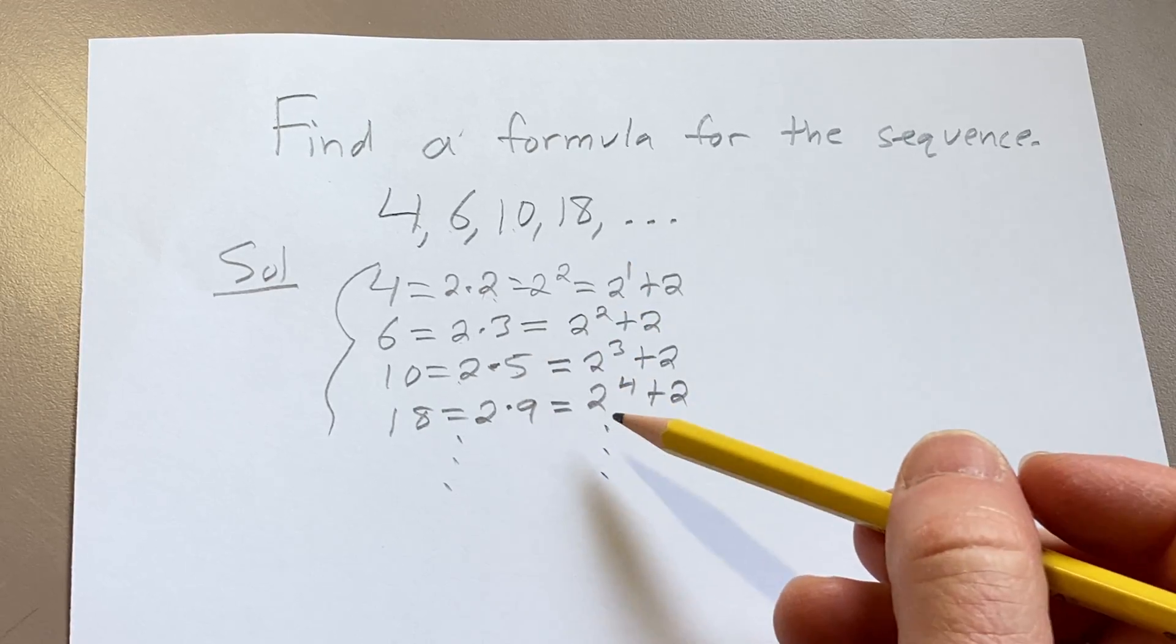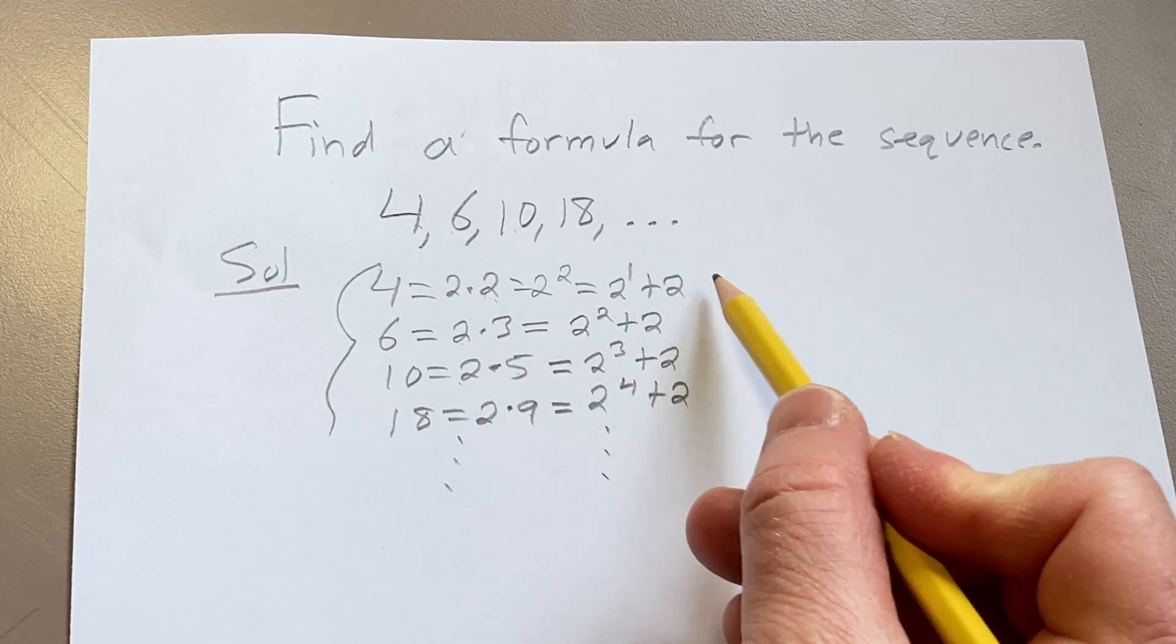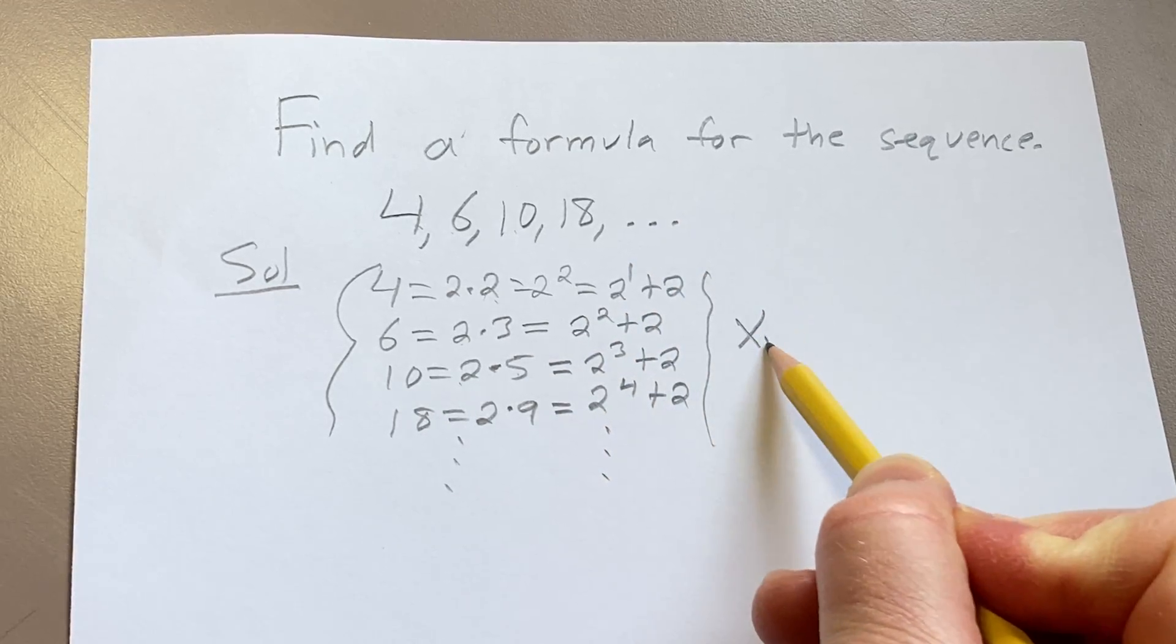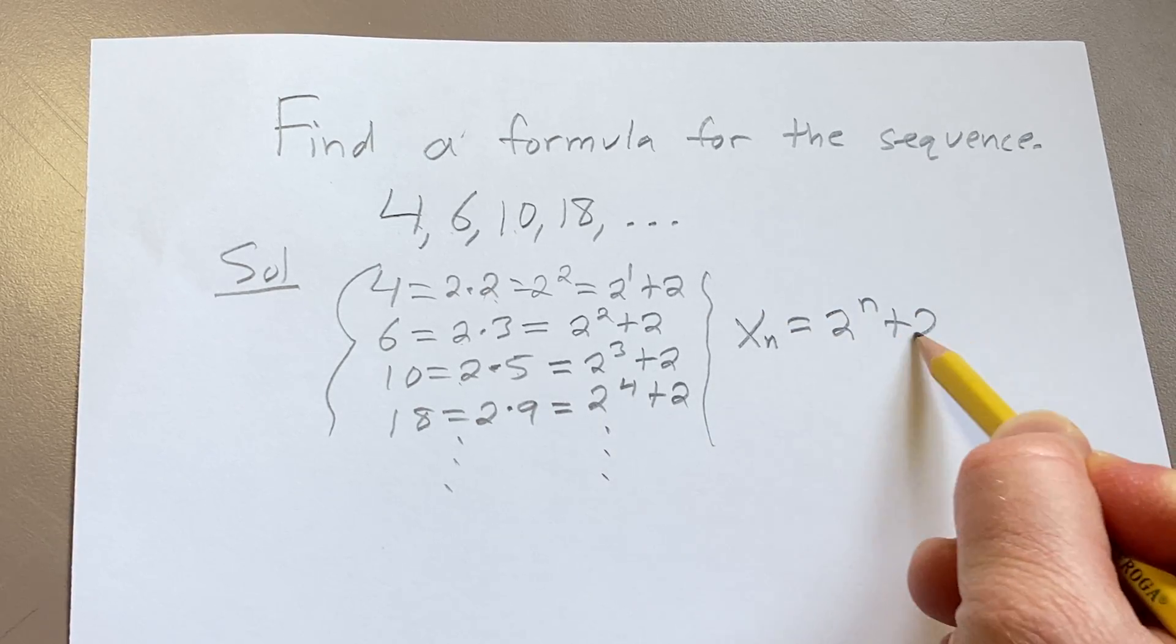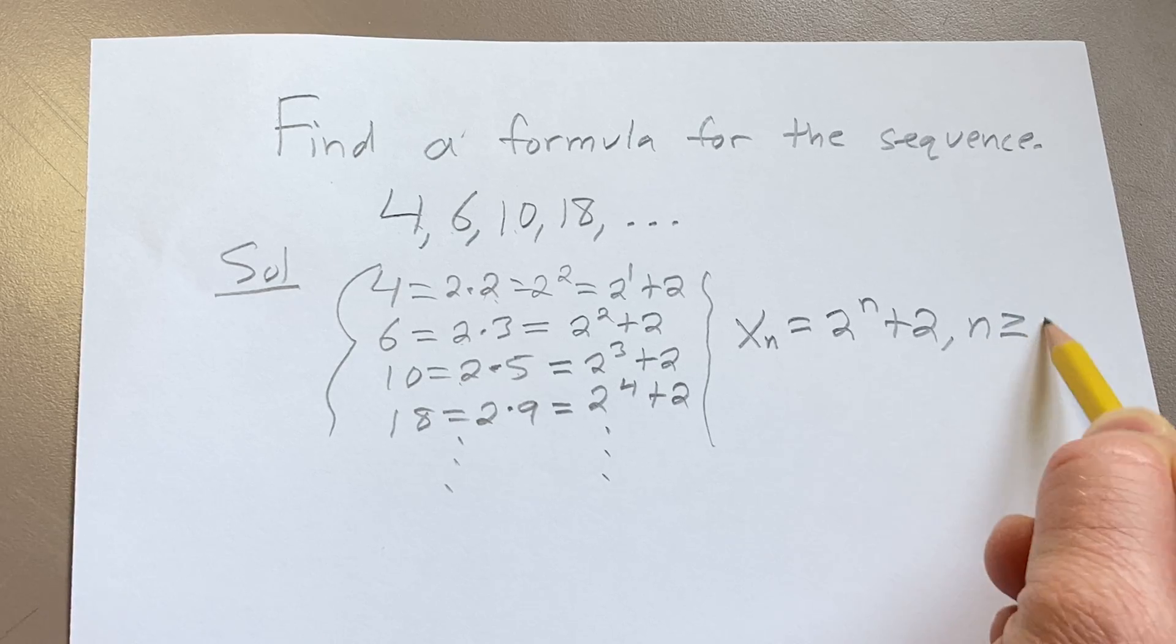So now we have a more distinguishable pattern, right? Because we can write the nth term of the sequence as 2 to the n plus 2, where n is greater than or equal to 1.